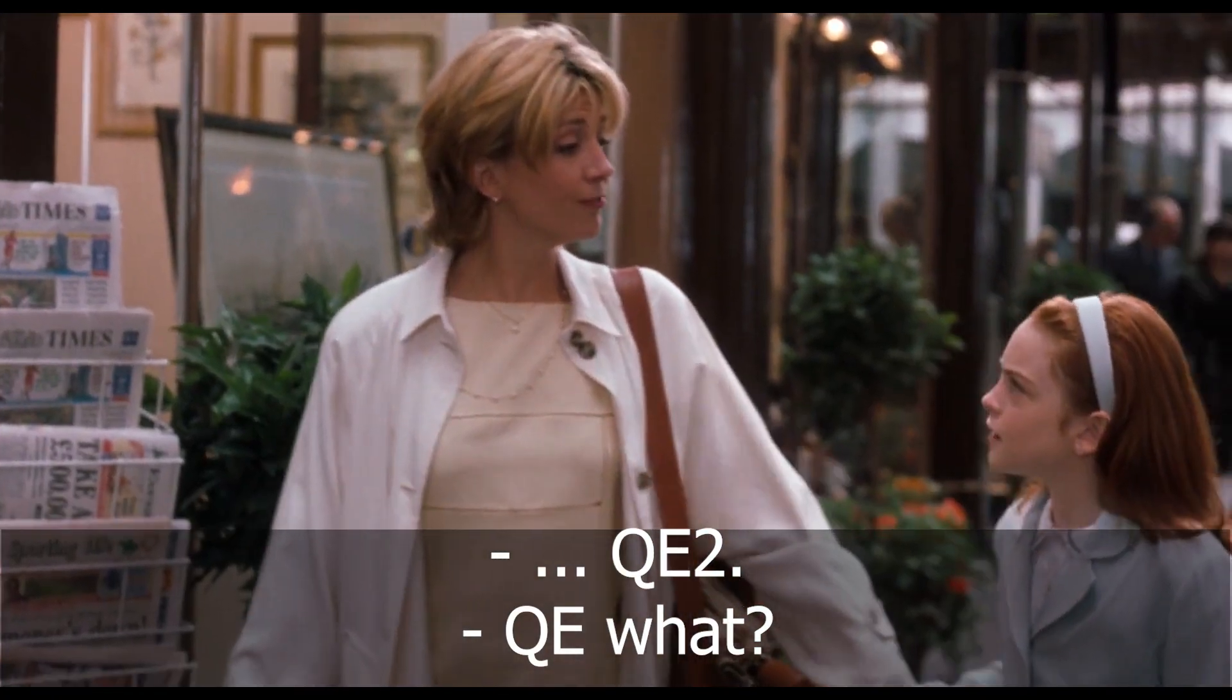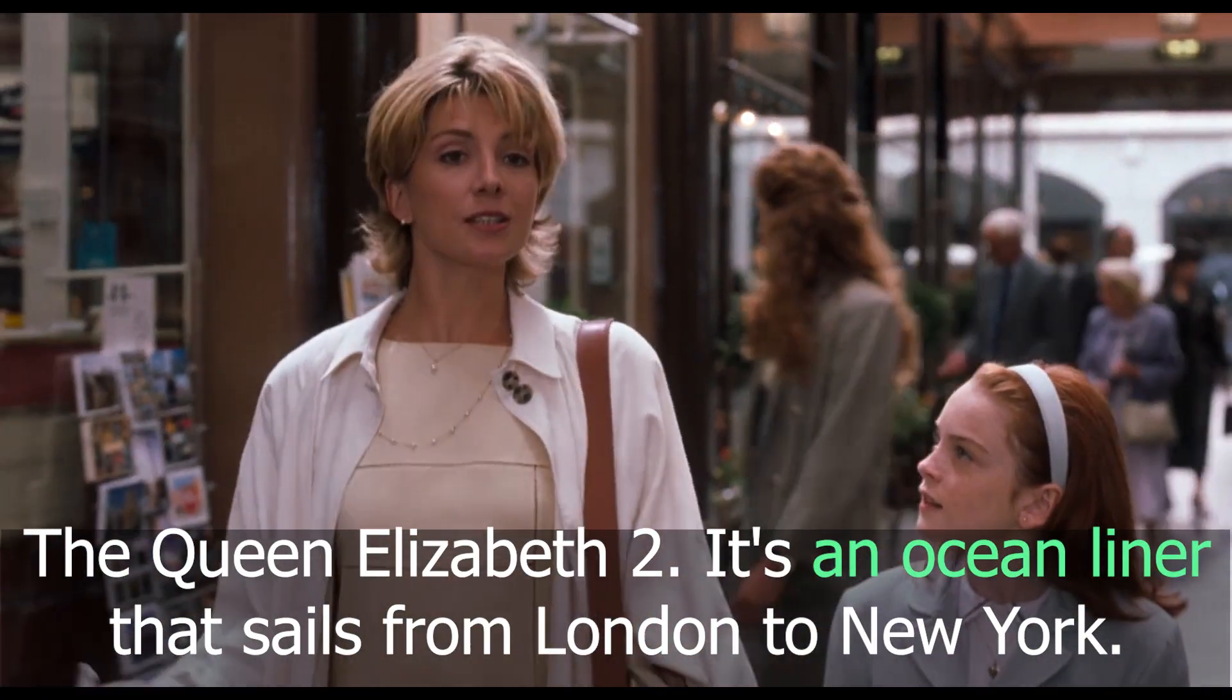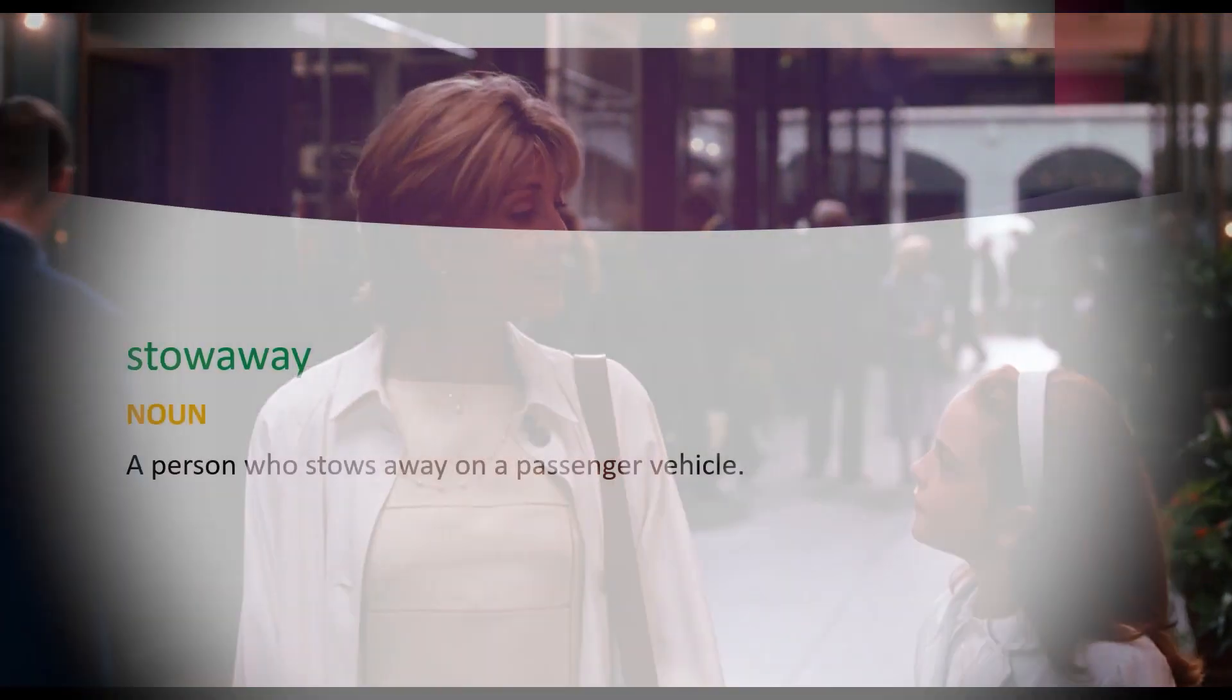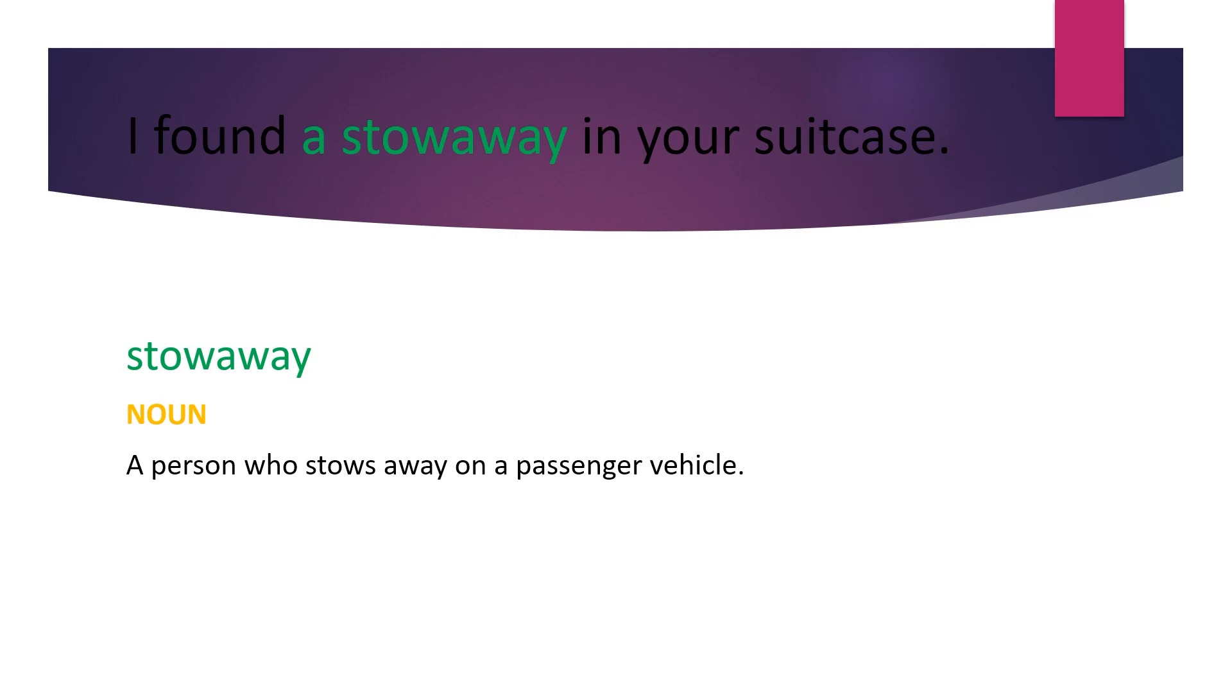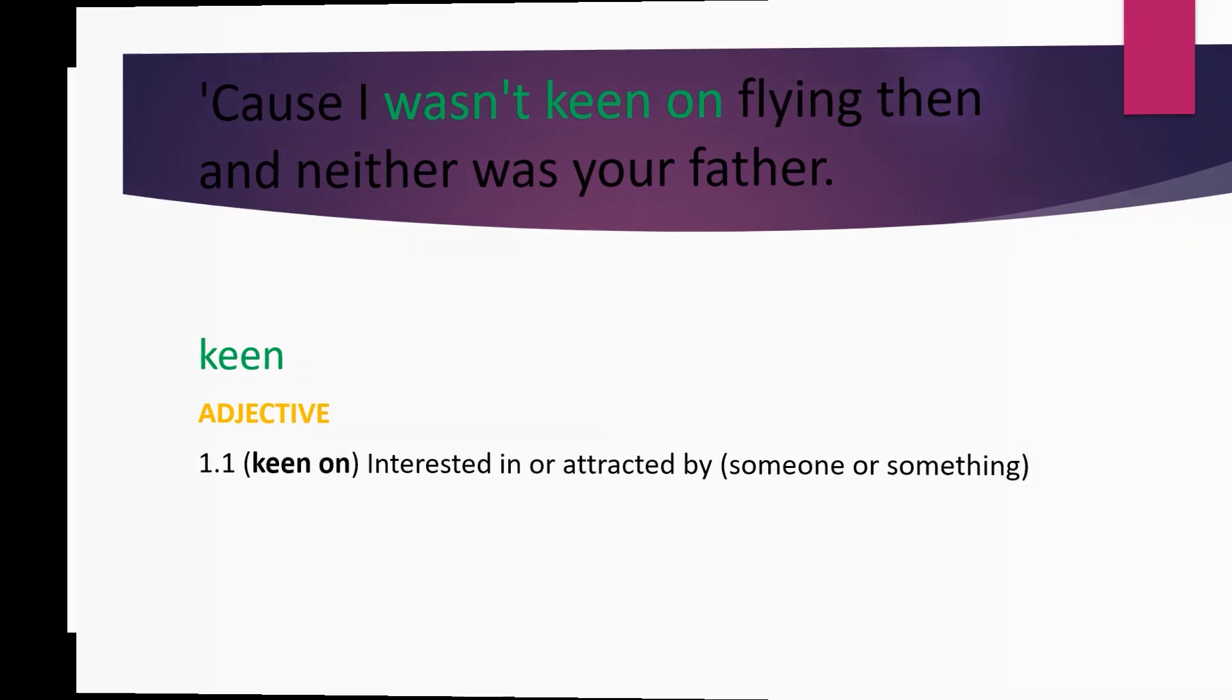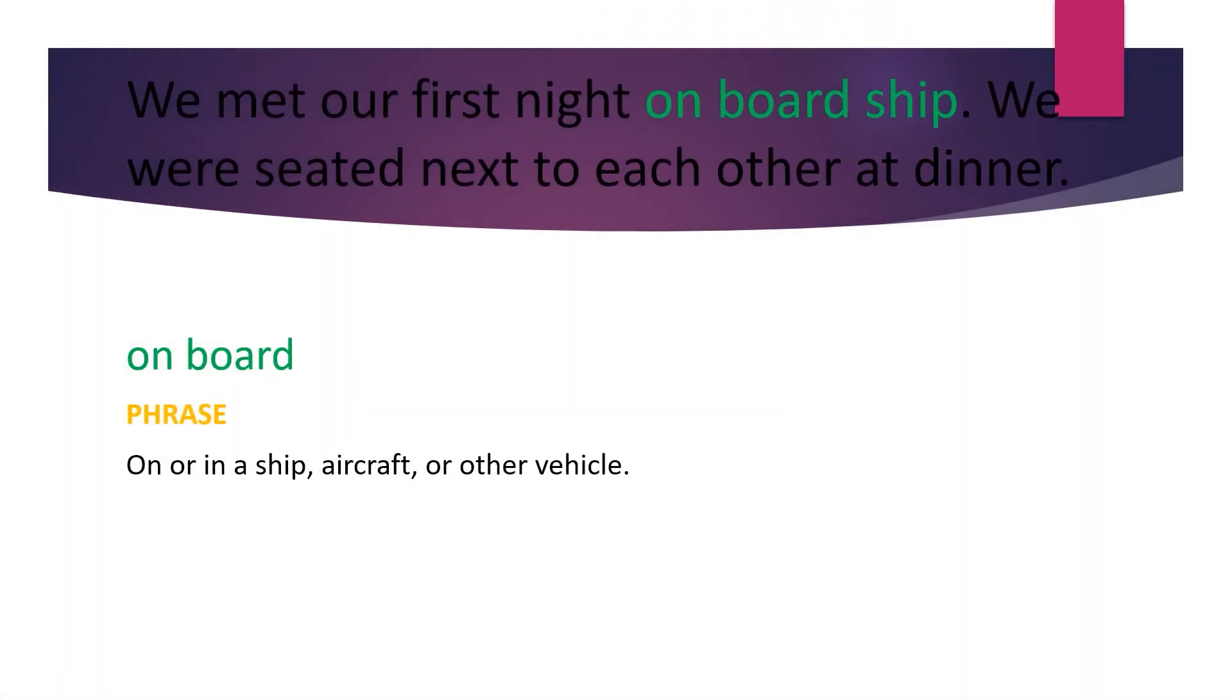I found a stowaway in your suitcase. Oh, hi. How's the photoshoot going? QE2. QE what? Queen Elizabeth II. It's an ocean liner that sails from London to New York. Because I wasn't keen on flying then, and neither was your father. Keen. Adjective. Keen on. Interested in and attracted by someone or something. On board. Phrase. On or in a ship, aircraft, or other vehicle.